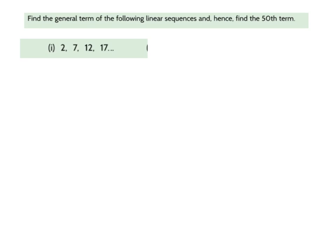Okay, so we're facing our first example here. And the question says, find the general term, or we could say the rule, for the following linear sequence, and hence, which means once you've done that, find the 50th term. Okay, so let's just first of all make sure it is a linear sequence. I've got the numbers 0, 2, 7, 12, 17.